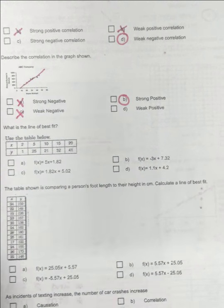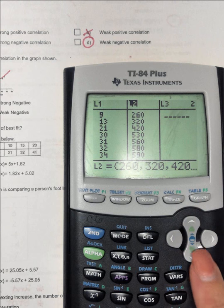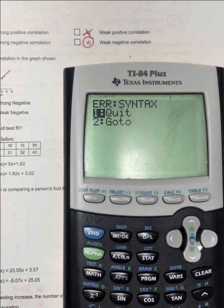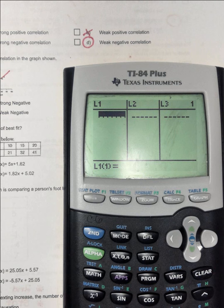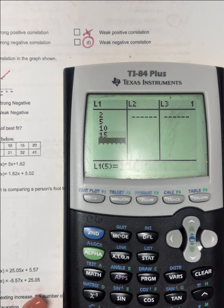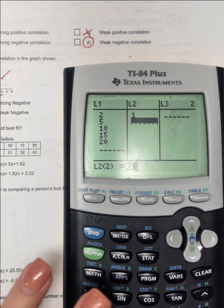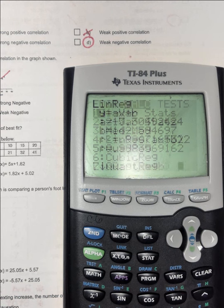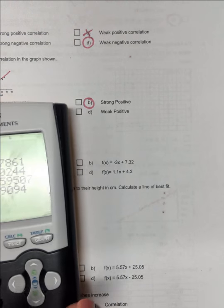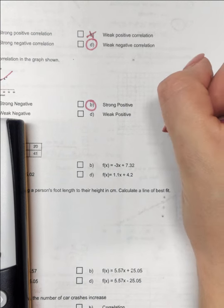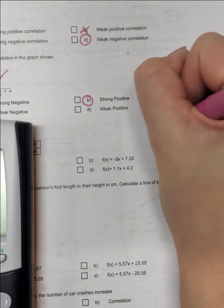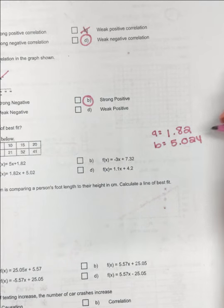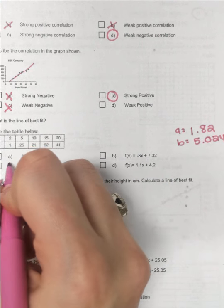Number eight, what is the line of best fit? So I'm going to enter these points in, stat, enter. Here, you can clear it out. So you've got 2, 5, 10, 15, 20. Then we've got 1, 25, 21, 32, 21. Stat, write 4. So we get 1.82 as our A, B is 5.024. So that should be the X, so it's right here at C.